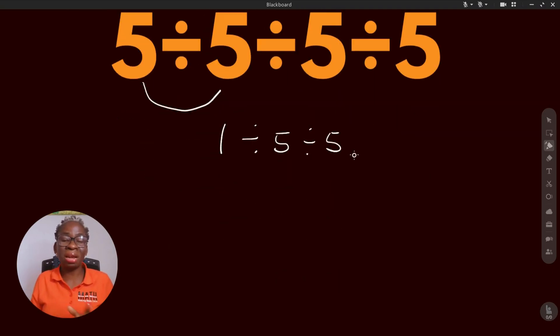Now we are left with 1 divided by 5, then divided by 5. Let's continue. So this means 1 divided by 5 means 1 over 5, then divided by 5. Now let's change the division to multiplication.